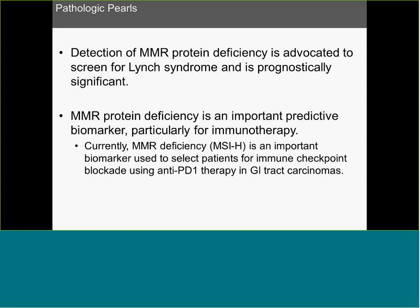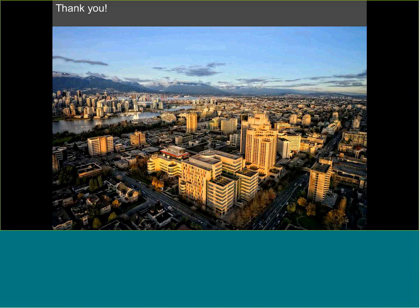Summary: detection of MMR protein deficiency is advocated to screen for Lynch syndrome and is prognostically significant. MMR protein deficiency is also an important predictive biomarker, particularly for immunotherapy, and is currently used to select patients for immune checkpoint blockade using anti-PD-1 therapies in GI tract carcinomas. This is part of the reason we are seeing more and more requests from oncologists to test solid tumors for MMR by IHC. Thank you very much for giving me the opportunity to share this with you.